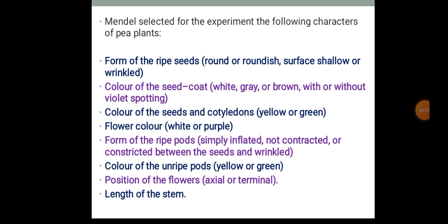Mendel selected the following characters of pea plants for his experiments: form of the ripe seeds, color of the seed coat, color of the seeds and cotyledons, flower color, form of the ripe pods, color of the unripe pods, position of the flowers, and length of the stem.